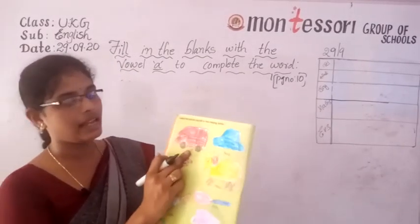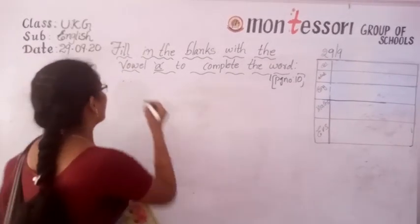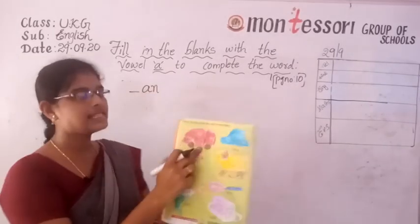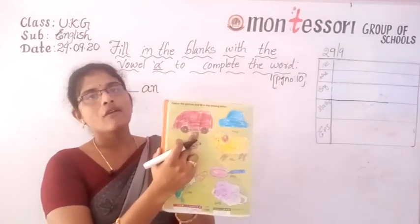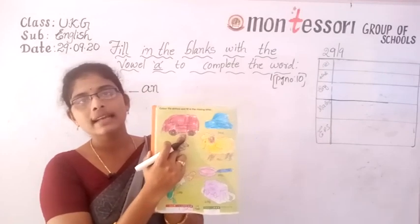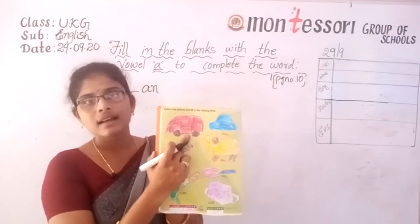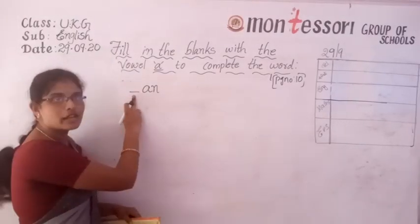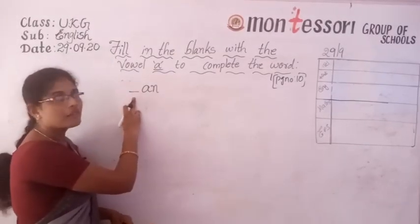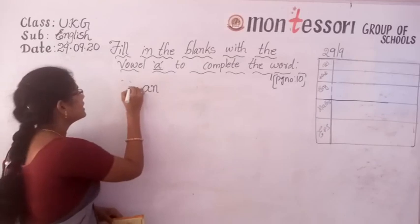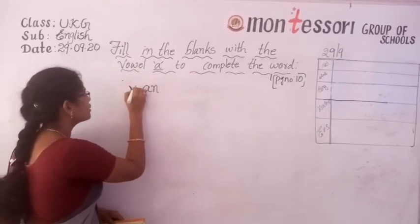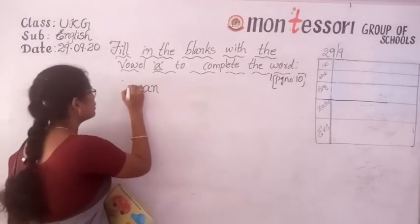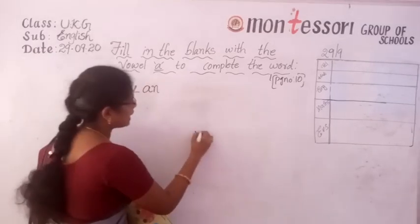First one — what did they give? A dash and A. What is this picture — car or bus? Van. For van, which letter do we have to write here? Not W — we have to write V. V-A-N. Write neatly on the line.